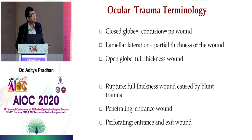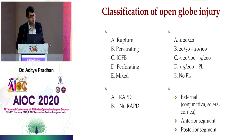Just repairing the wound is not enough — these cases require significant surgical follow-up, multiple surgeries, and lifetime care from cornea, glaucoma, and vitreoretinal colleagues. Regarding terminology: closed globe injury with no obvious wound is a contusion; partial thickness is a lamellar laceration; open globe means full-thickness wound; rupture is full-thickness caused by blunt trauma; penetrating means a single entrance wound; perforating means entry and exit wounds.